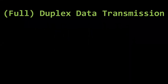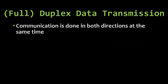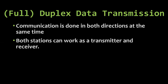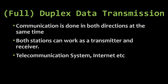Full duplex or duplex data transmission means communication is done in both directions at the same time. Data transferring can happen simultaneously from the first device to the other and from the other device back to the first device. Both stations can work as transmitter and receiver at the same time. Telecommunication systems like cell phones, audio chatting, and the internet are the best examples — at the same time data is transferring from our computer to the internet and data can also be transferred from the internet to the computer.